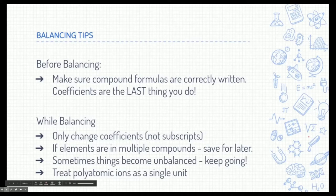Now, when you balance, you should only change coefficients. Never touch the subscripts. That includes polyatomic ions or the ionic compounds that you've made or the covalent compounds. If elements are in multiple compounds, you might want to save them for later. Sometimes they get a little bit messy, but save the complicated ones for later and things might work out. Sometimes things become unbalanced. Just keep trying and keep doing it.